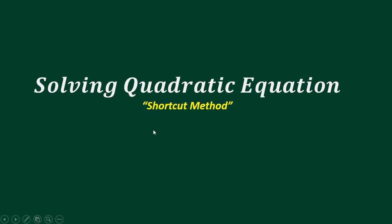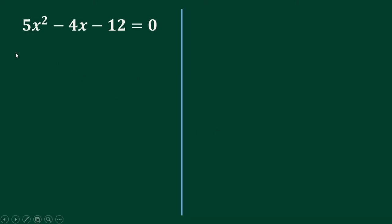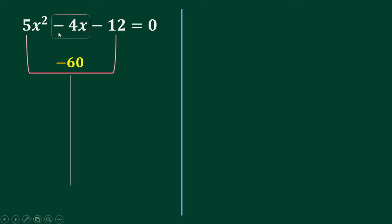Let's solve this quadratic equation using the shortcut method. For the example 5x² - 4x - 12, first you multiply 5 and negative 12, so that's negative 60. Then you list all the factors of negative 60. Now since the middle term is negative, the bigger number in each factor pair should be negative. So you have 1 times negative 60, 2 times negative 30, 3 times negative 20, 4 times negative 15.